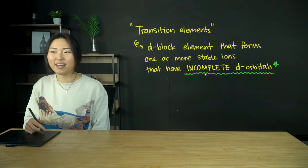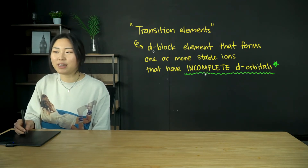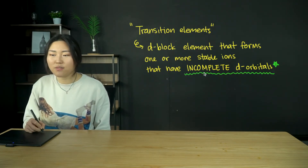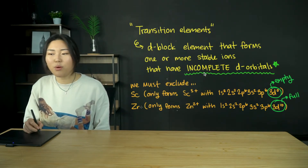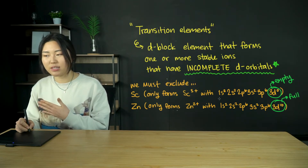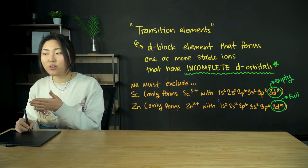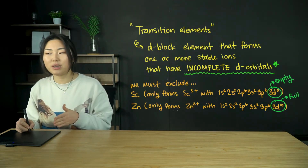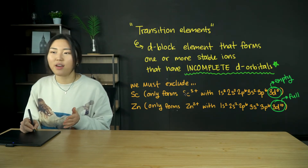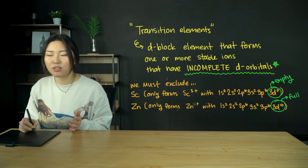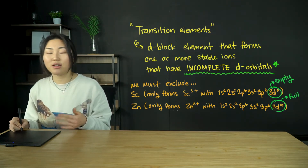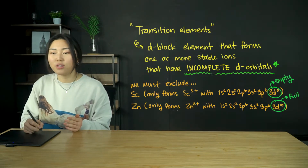Let's start off by defining transition elements. A transition element is a d-block element that forms one or more stable ions that have incomplete d-orbitals. This means we need to exclude scandium and zinc. Scandium only forms Sc3+, with the electronic structure 1s2, 2s2, 2p6, 3s2, 3p6, 3d0 — the d-orbital is completely empty, not incomplete. Zinc only forms Zn2+, with 3d10 — a full d-orbital. So neither can be a transition element.